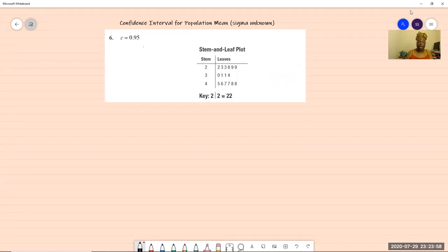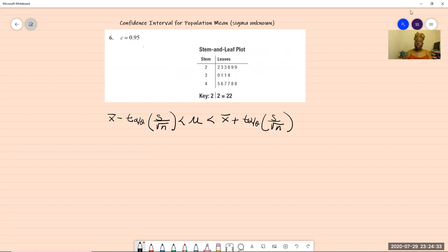The formula is X bar minus T alpha over two times S over the square root of N is less than mu is less than X bar plus T alpha over two times S over the square root of N. So here's your formula.